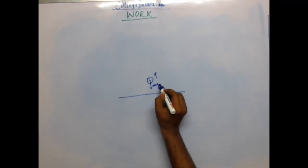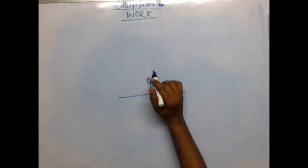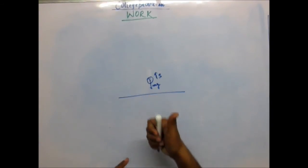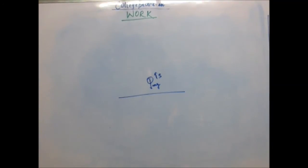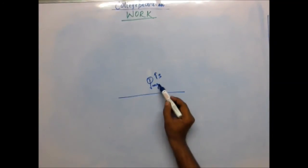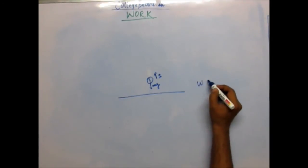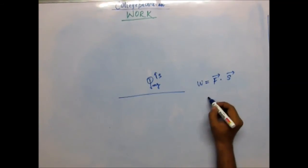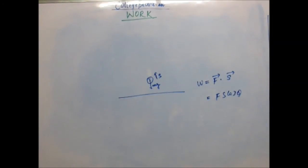The force of gravity, mg, always acts downward. So if the ball is going upward, the displacement is upward and the force is downward — the angle between displacement and force is 180 degrees. The work done by earth (the agent causing this force) would be negative. Using the formula: work = fs cos theta, with theta = 180°, cos 180° = −1, so work comes out negative.